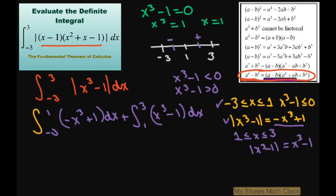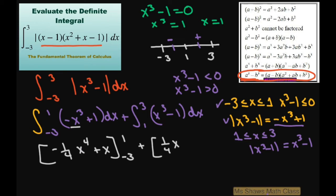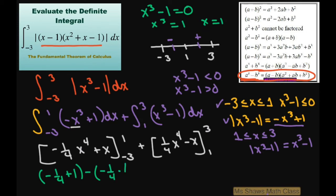Now let's go ahead and integrate this. For the first piece, the antiderivative is negative one-fourth x to the fourth plus x, evaluated from negative three to one. For the second piece, the antiderivative is one-fourth x to the fourth minus x, evaluated from one to three. Substituting in, we get: negative one-fourth plus one, minus negative one-fourth times negative three to the fourth minus negative three.